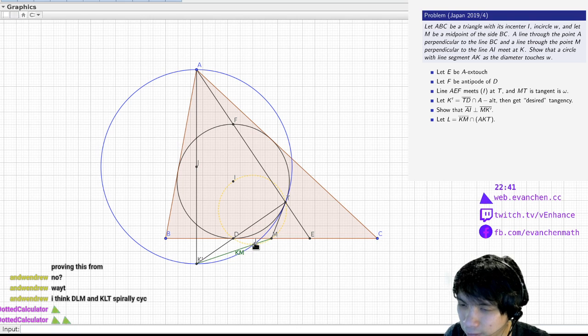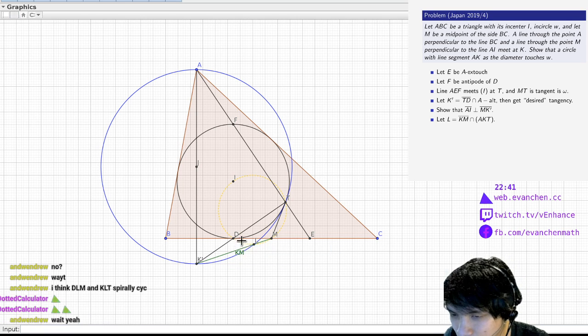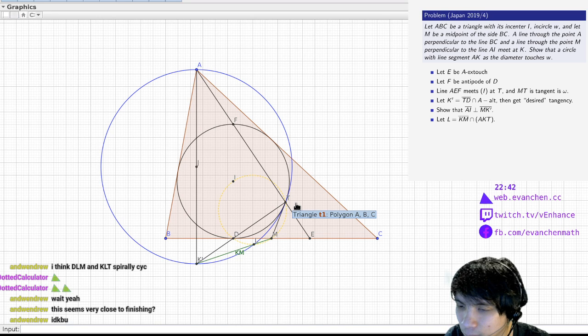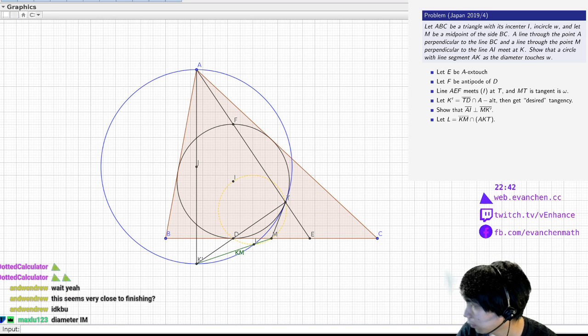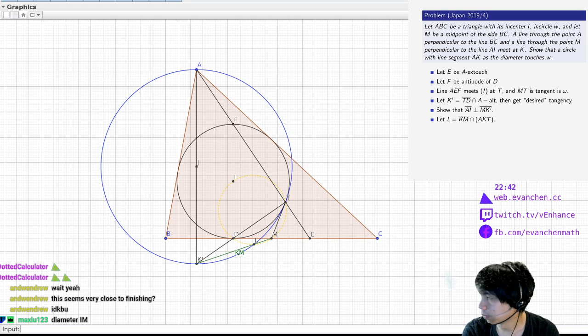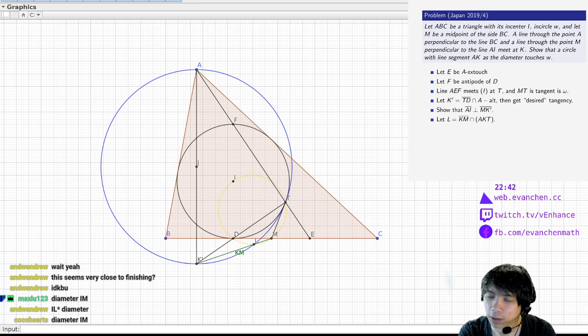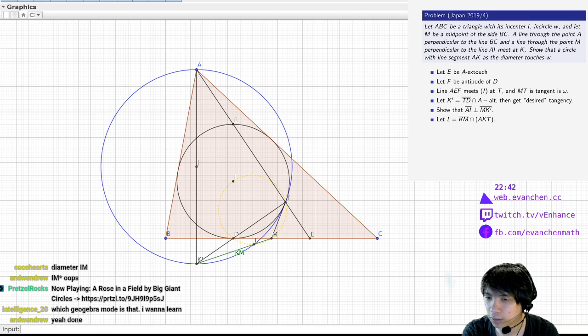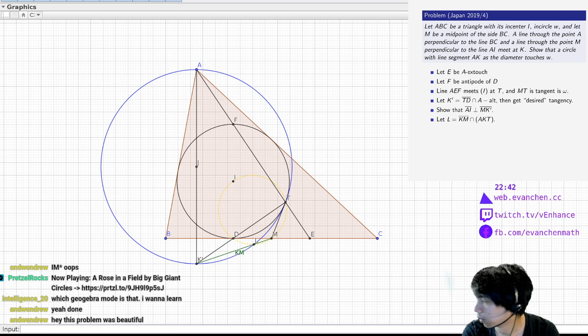So if I define this, then why is that cyclic? I just need... Okay, that should just be angle chase then, right? So angle directed angle TLK is equal to directed angle T... sorry, TLK prime is equal to TAK prime equals TMK prime equals TML. Or sorry, not TMK, TMD. TMD.